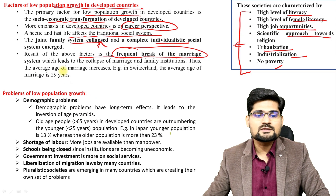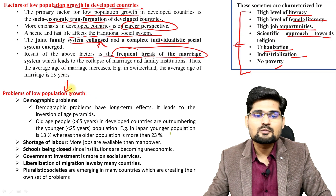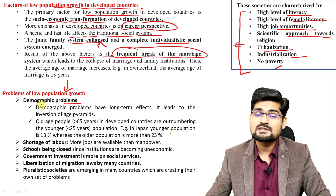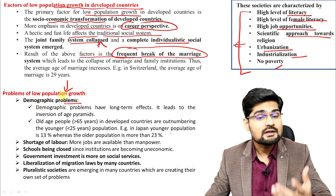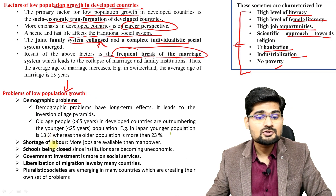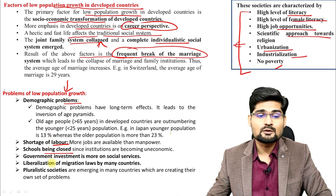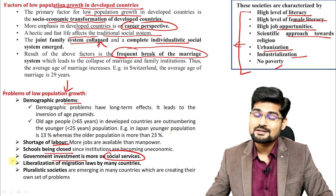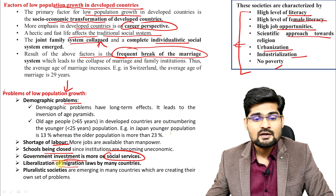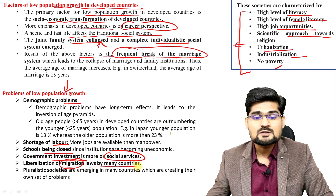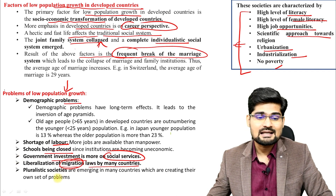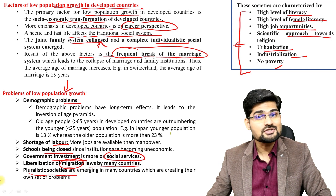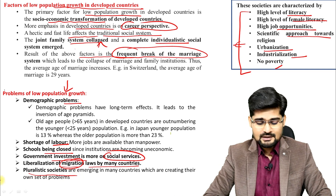These societies have particular characteristics: high level of literacy, high level of female literacy, high job opportunities, scientific approach towards religion, then urbanization, industrialization, and no poverty. So the population subsides because of this. Problems of low population growth include over-aging populations, shortage of labor, schools being closed, government investment being more on social service schemes, liberalization of migration laws, and pluralistic societies and cultures.